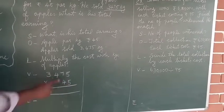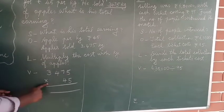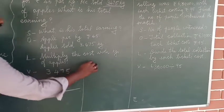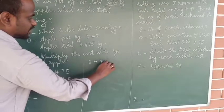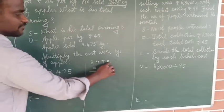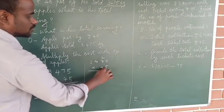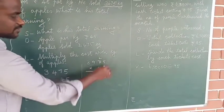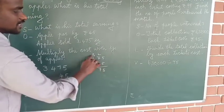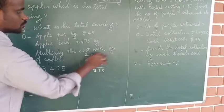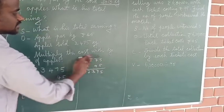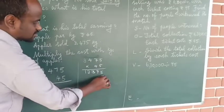So I'm choosing the operation of multiplication — multiply the cost 45 with kilograms of apples, that is 3,475. So 3,475 multiplied by 45. Let's do the rough work. Five fives are 25, remainder 2. Seven fives are 35, plus 2 is 37, remainder 3. Four fives are 20, plus 3 is 23, remainder 2. Three fives are 15, plus 2 is 17.